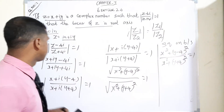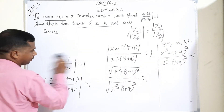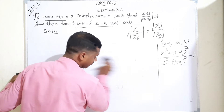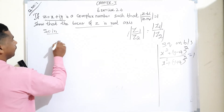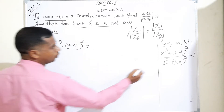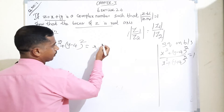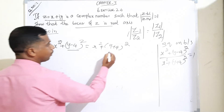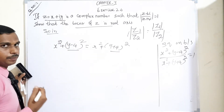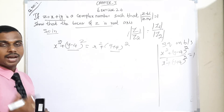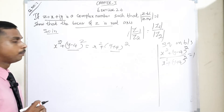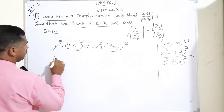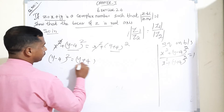Cross multiplying: x squared plus (y minus 4) whole squared is equal to x squared plus (y plus 4) whole squared. We have a minus b whole squared on one side and a plus b whole squared on the other. After cross multiplication, x squared cancels from both sides, leaving: (y minus 4) whole squared is equal to (y plus 4) whole squared.